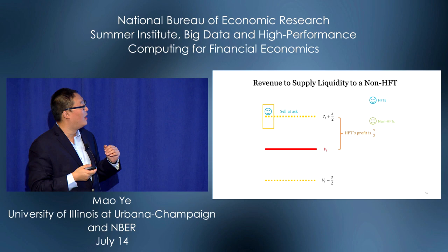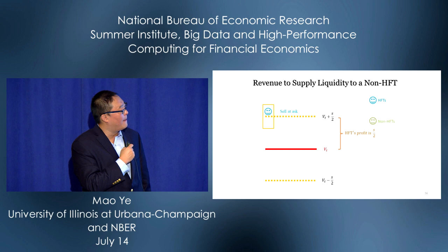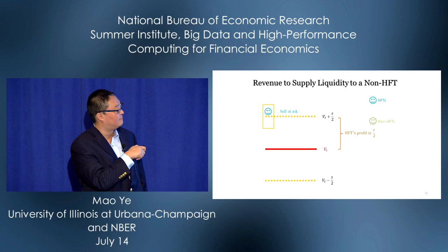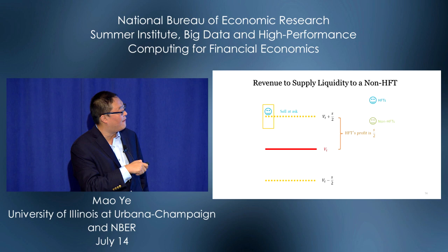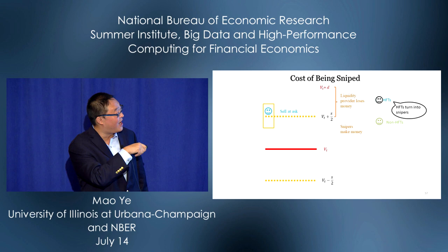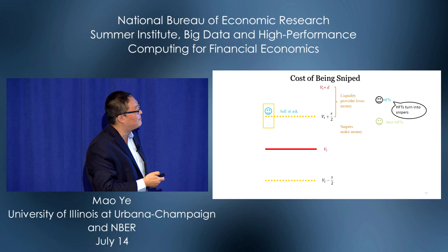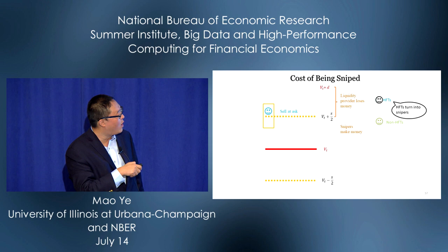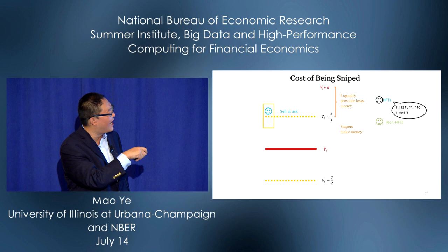In the Budish, Cramton, and Shin model: HFT sells at the ask. If a non-HFT arrives and buys, the HFT makes half the bid-ask spread — that's revenue. But the cost is that the value can jump. While one HFT sells at the ask, other HFTs become snipers: they see a stale quote and snipe it. With some probability, the liquidity provider gets sniped and loses money; snipers make money. The main takeaway from Budish, Cramton, and Shin: even with public information, because of sniping risk, the bid-ask spread is not zero.